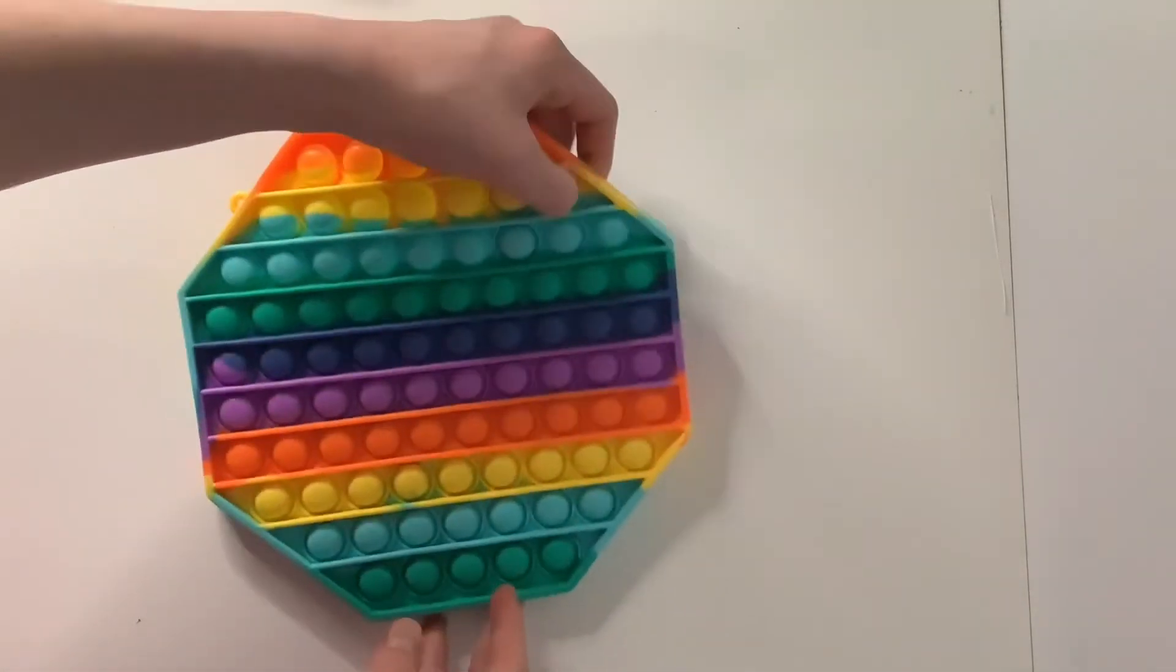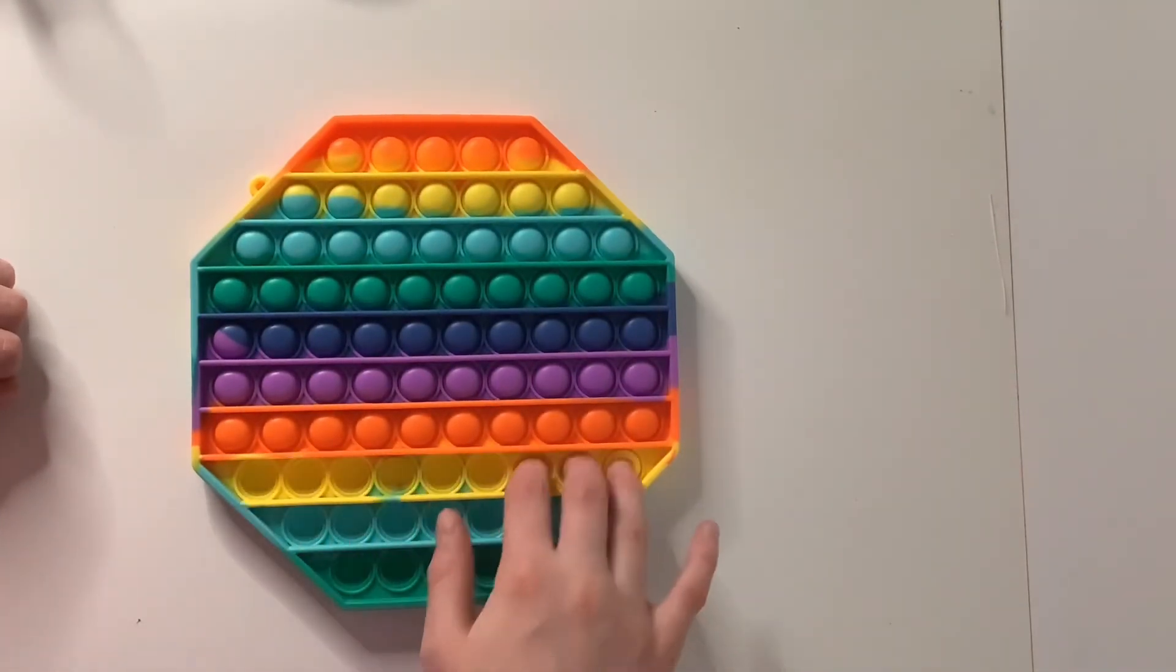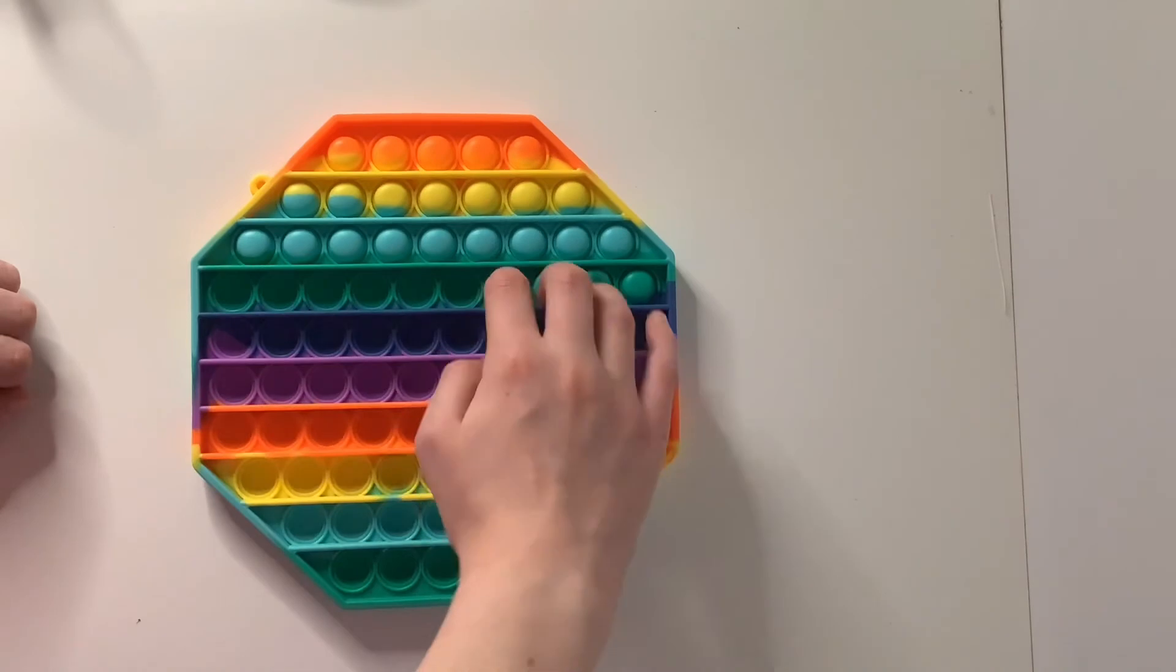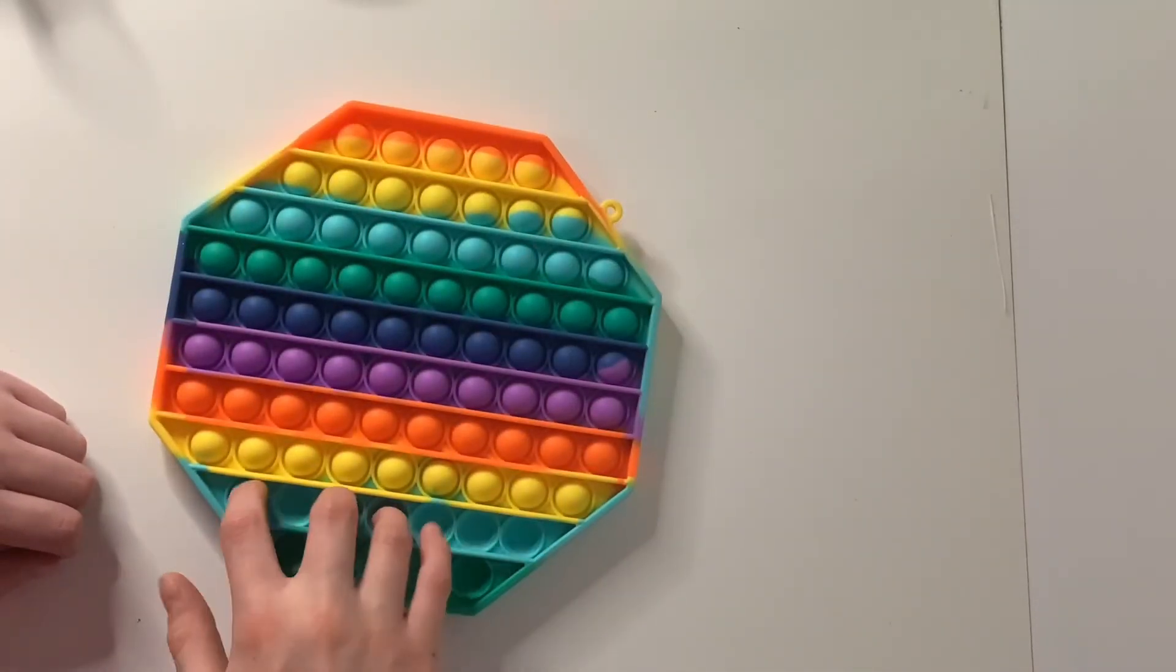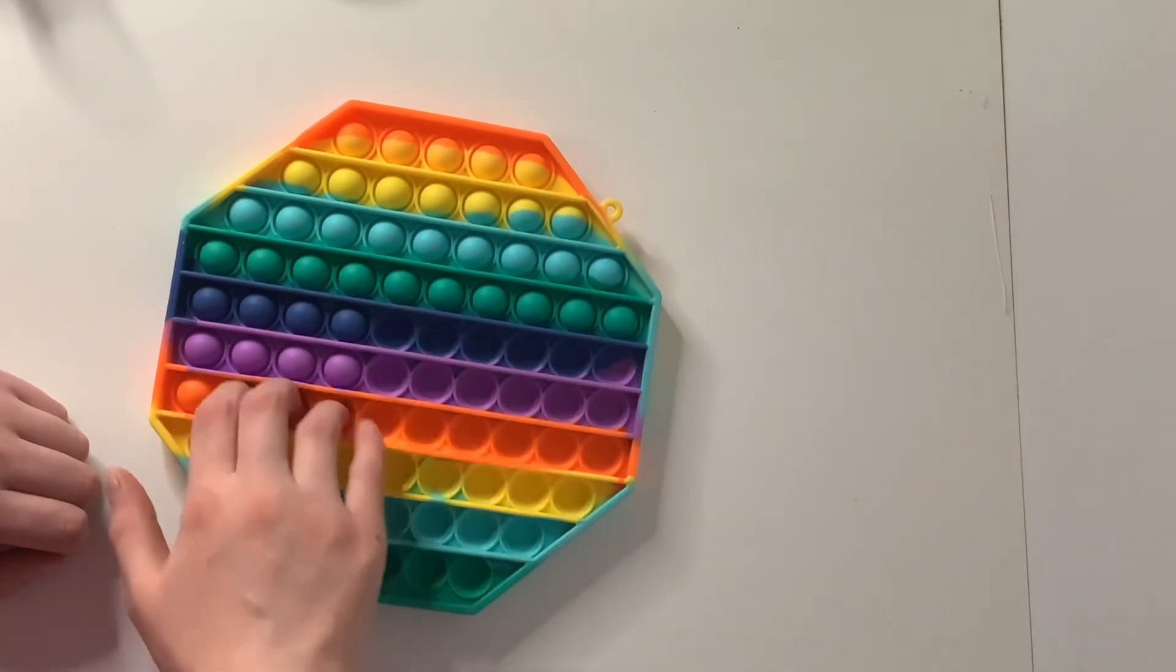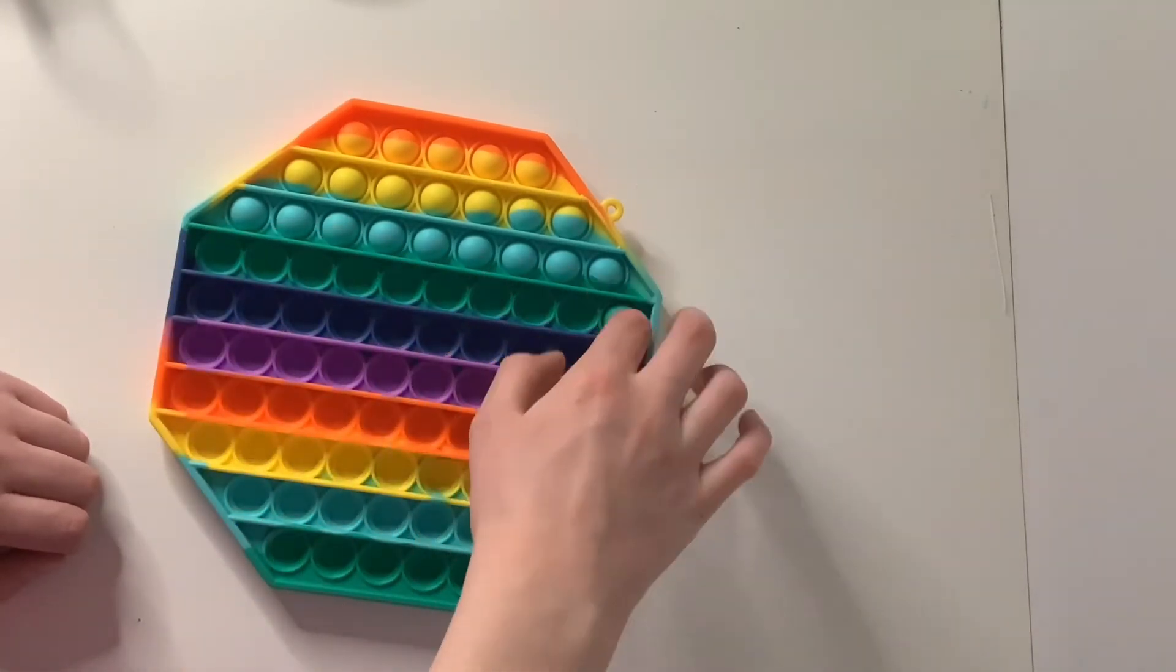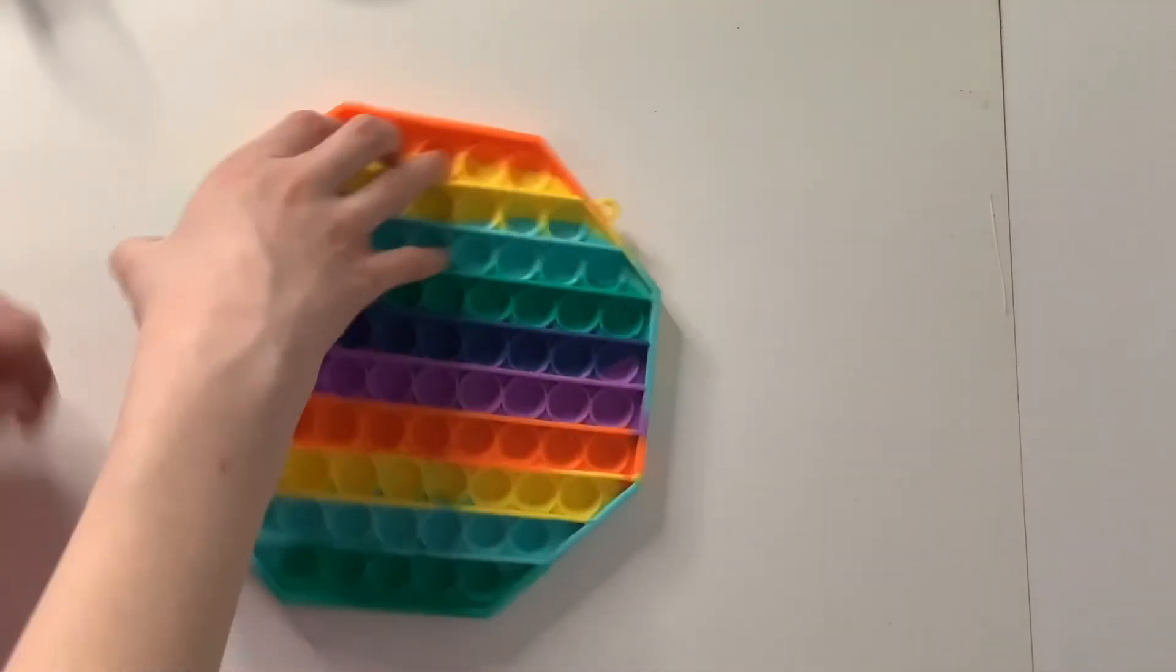And then this is my biggest pop-it that I have as of now, and it's an octagon. This one is really nice. I think it has 82 pops, like 82 little bubble things, and it's really fun. And both sides on this are super loud, so that's really good.